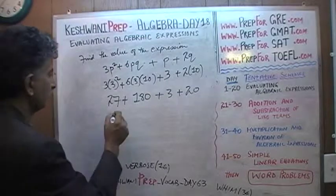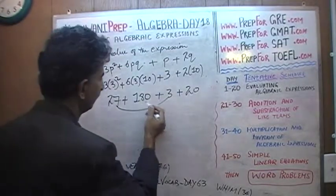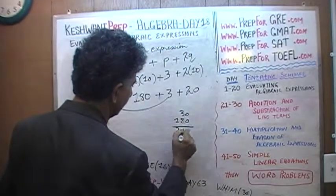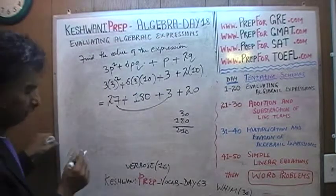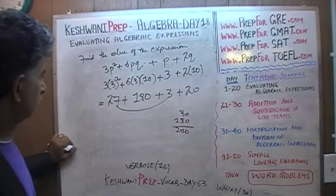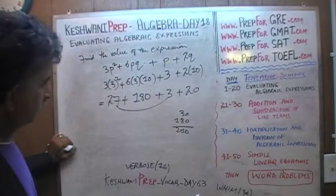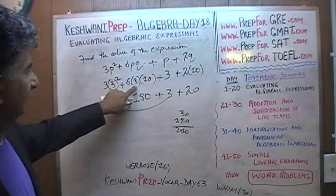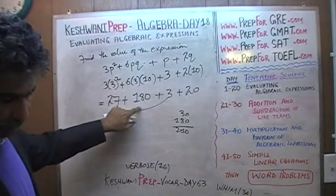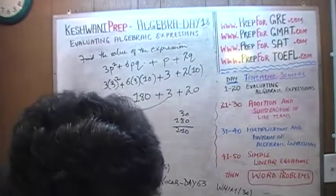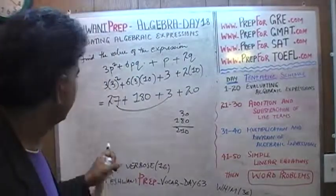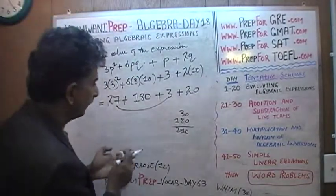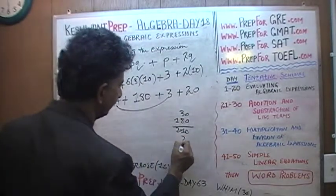It's actually very straightforward: 27 plus 3 is 30, plus 180 is 210, plus 20 is 230. Wait — in my notes I had 140. That's because I had mistakenly written 90 instead of 180. Oh, this is 6 times 3 which is 18, not 9 — so this step is 180, not 90. That error made my notes wrong. So the correct total is 230.